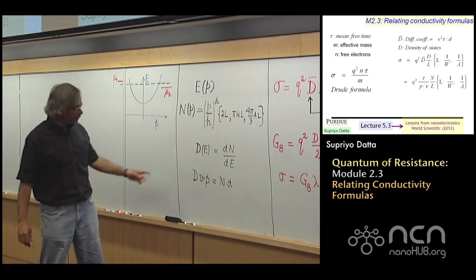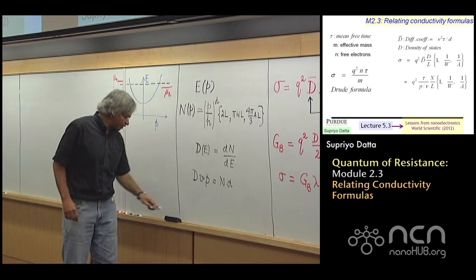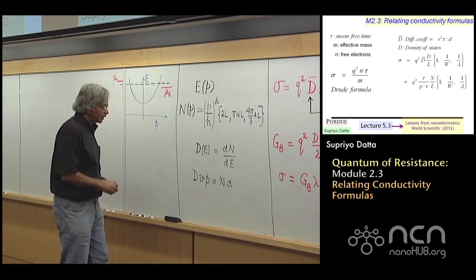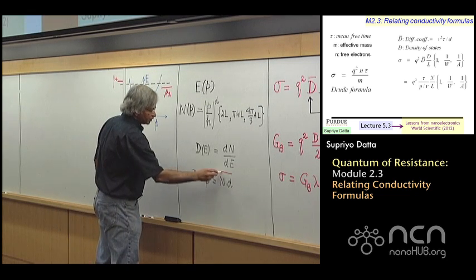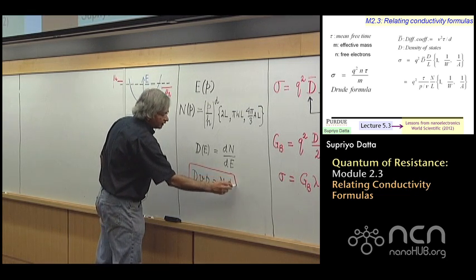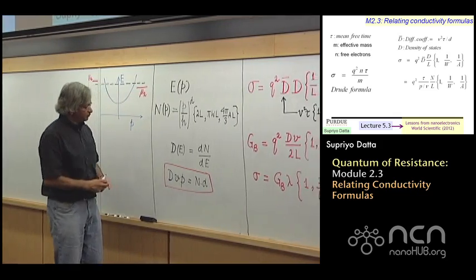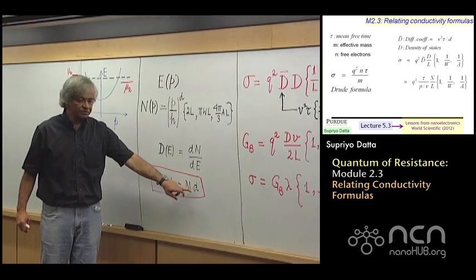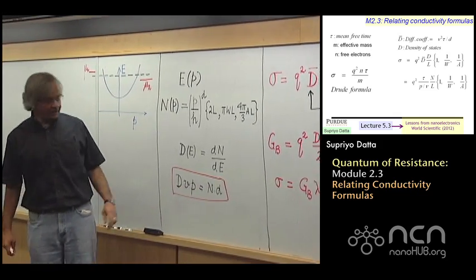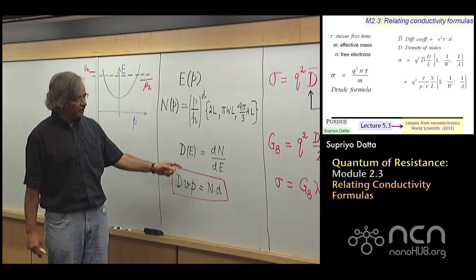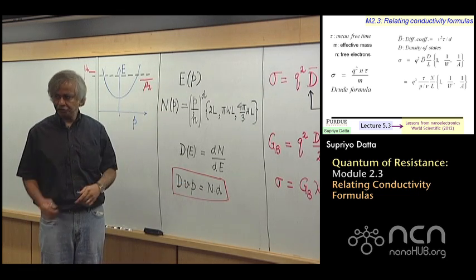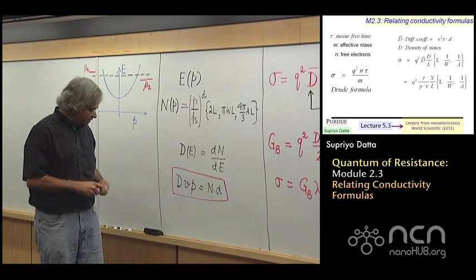And in the first module, that's 2.1, I showed that there is a general relationship that should hold irrespective of the energy-momentum relation. And that is d times v times p should be n times the number of dimensions.